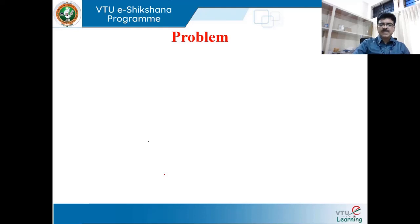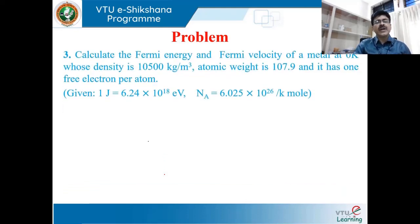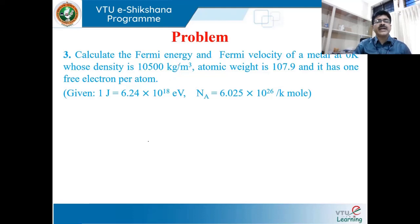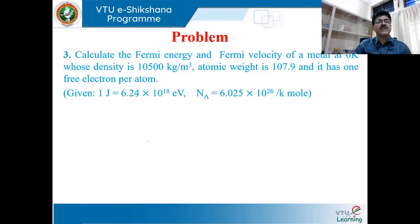Let me work out a problem. Calculate the Fermi energy and Fermi velocity of a metal at 0 Kelvin whose density is 10,500 kg/m³, atomic weight is 107.9, and it has one free electron per atom. Given: 1 joule = 6.24 × 10^18 eV (i.e., 1 eV = 1.602 × 10^-19 J), and Avogadro's number = 6.025 × 10^26 per kilo-mole.